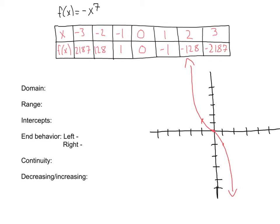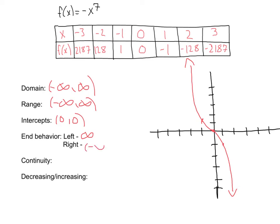Let's go ahead and analyze this. Our domain — our x values — we've got no restrictions, we have a y value for every x value, so our domain is negative infinity to positive infinity. Our range this time: we actually do have y values for each part of the graph, so the range is also negative infinity to positive infinity. Intercepts: our intercept again is at zero, zero. End behavior: as we go to the left it's going up to positive infinity; as we go to the right it's going down to negative infinity.